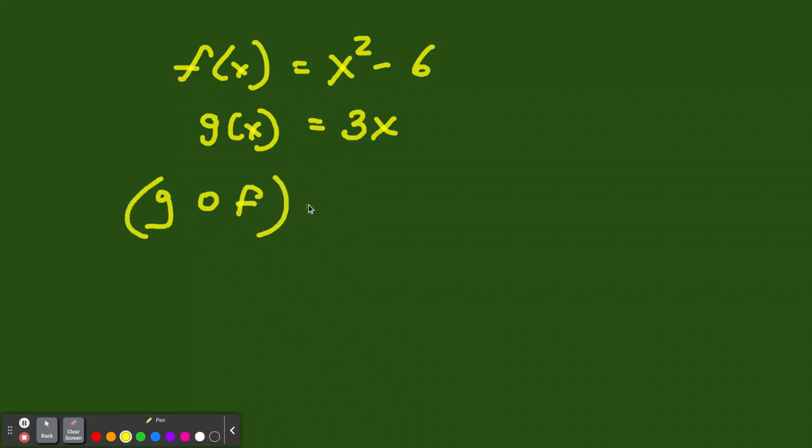Let's say we had f of x equals x squared minus 6. And then we had g of x equals 3x. And then you saw something like this. You see, g had this o there, right? Open circle, f. So this is different if it was f first. It's g first. In other words, we're going to take the g, and we want to know, we're going to replace it with f of x. I'll explain that.